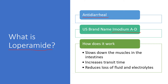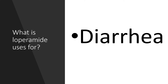How does it work in the body? It works by slowing down the muscles in the intestines. It helps increase the transit time — the longer time that food and liquid is in the digestive tract — and it helps reduce the loss of fluid and electrolytes.